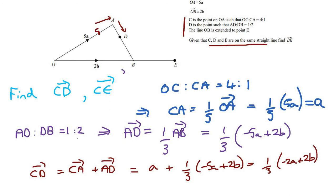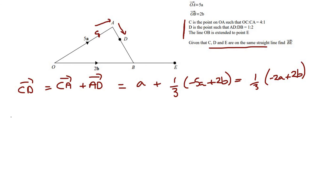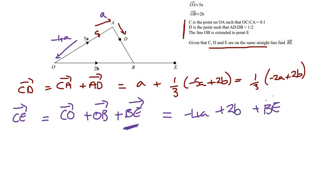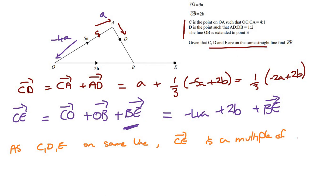We still need to find CE. The vector CE equals C to O plus O to B plus B to E. Since CA equals a, CO must equal 4a, but since we're going the opposite direction it's −4a. O to B is 2b. B to E is what we're trying to find, so CE equals −4a + 2b + BE. Since C, D, E are on the same straight line, CE must equal K times CD, so CE equals K times one-third(−2a + 2b).